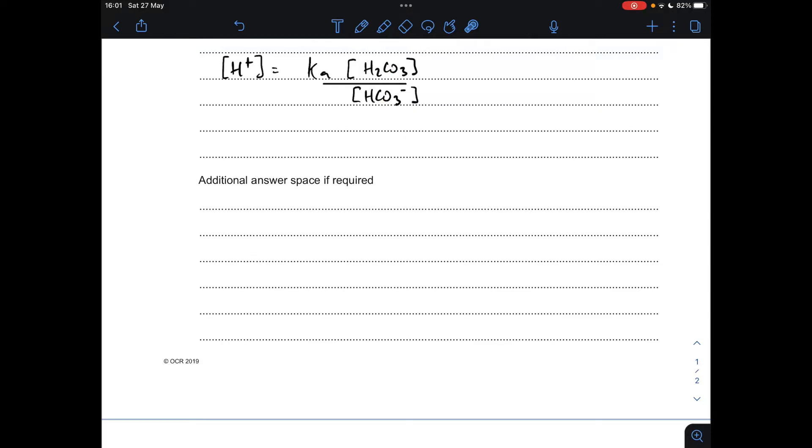We're after the salt to acid ratio, but in the Ka expression it's the wrong way around - we've got acid over salt but we want salt over acid. So all we need to do is rearrange this expression to get the salt to acid ratio that we're after.